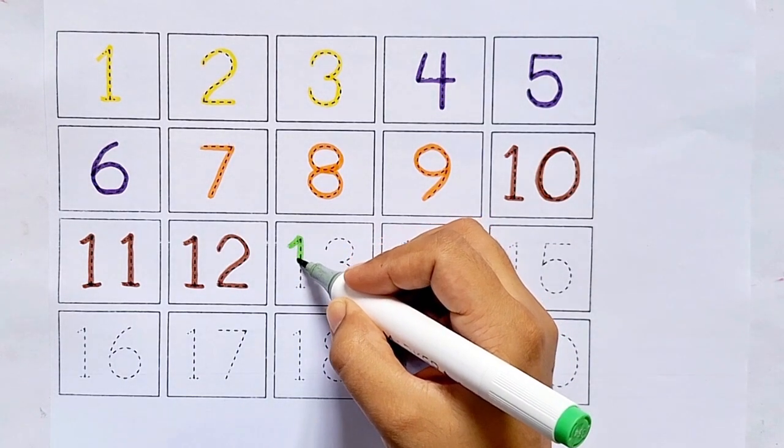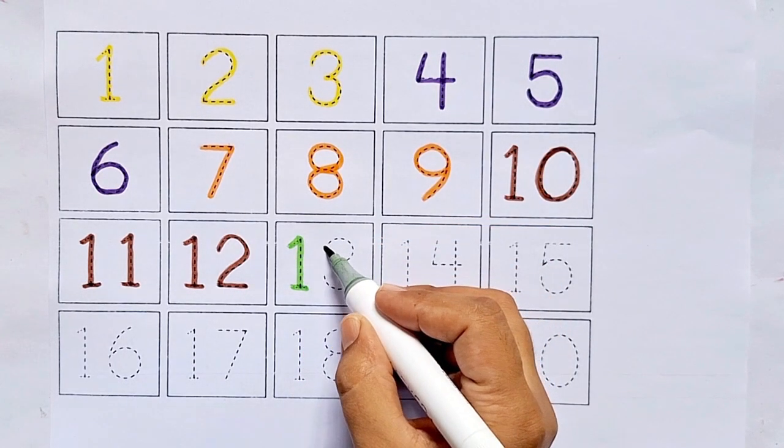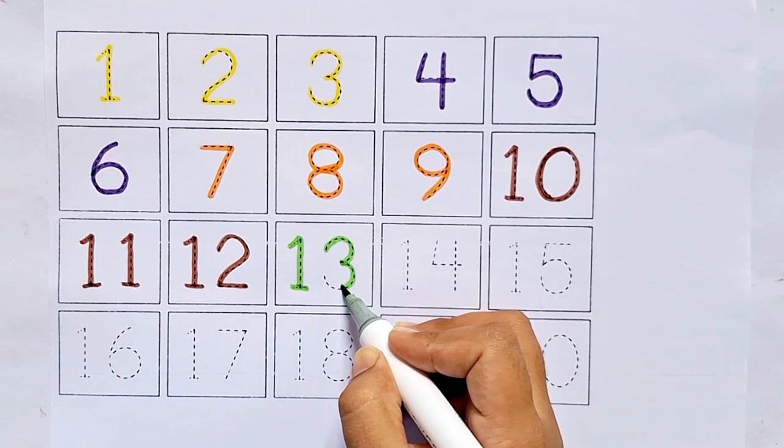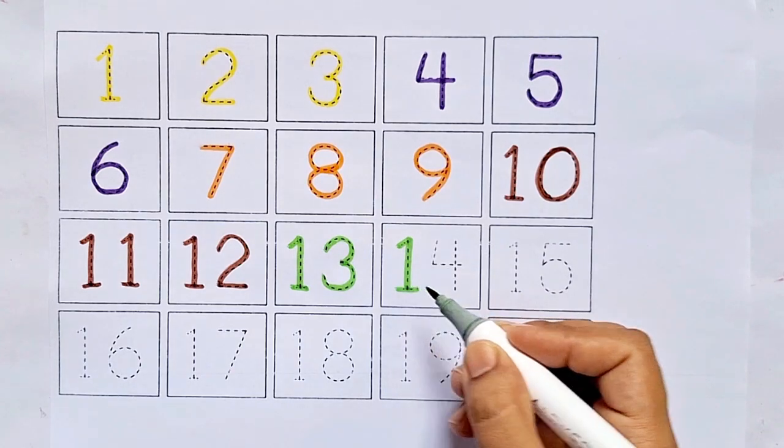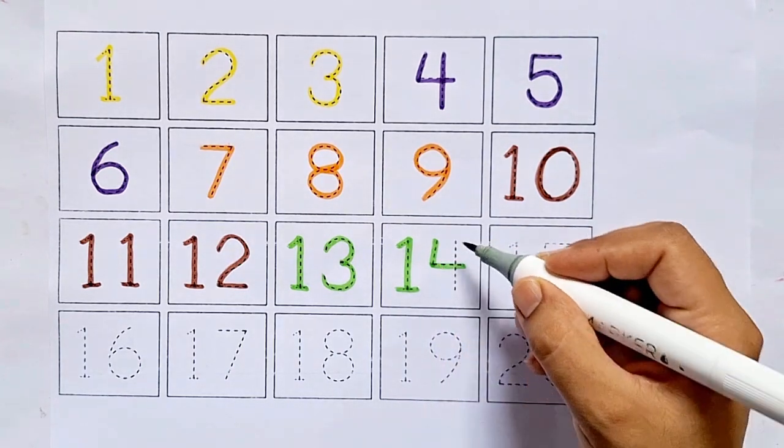Thirteen. One, three, thirteen. After twelve comes thirteen. Fourteen. One, four, fourteen. After thirteen comes fourteen.